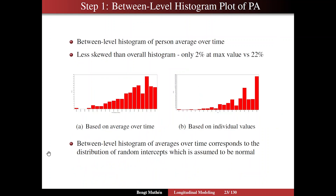On slide 23, we show a between-level histogram of each person's average over time. You take each person's average, and that becomes a new variable across people, so 240 observations, and then you do a histogram of that — done in Mplus. You see that variable is much less skewed than the earlier histogram for individual values. Now we only have 2% at the max value versus 22%. The max value is the most common value observed in the data, but it does not mean it's the most common average value — two different things.